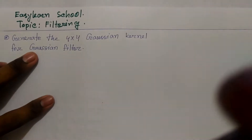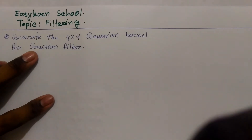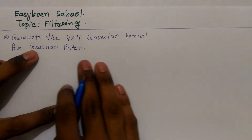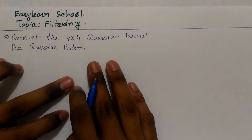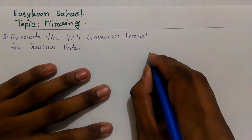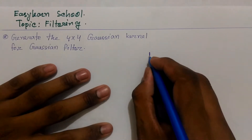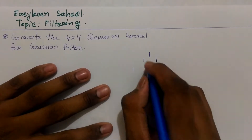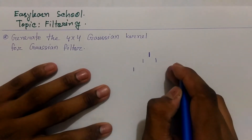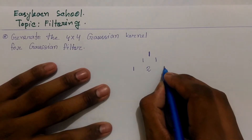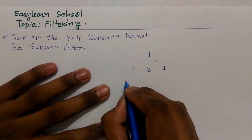The 1x4 Gaussian kernel values are: 1, 2, 1. We work out the values from left to right side, giving us 1, 2, 1.